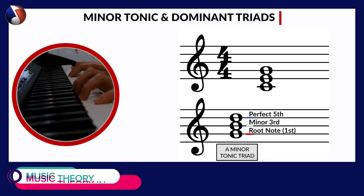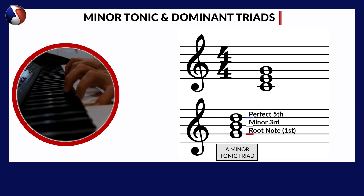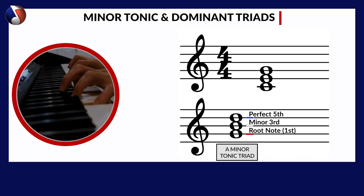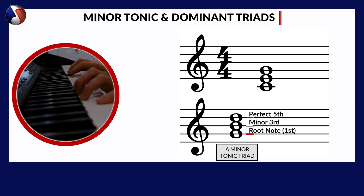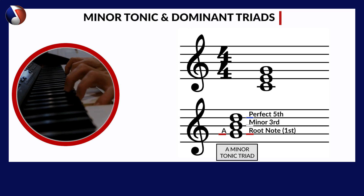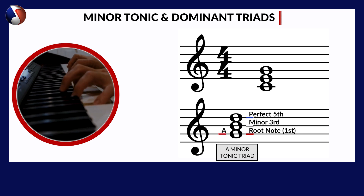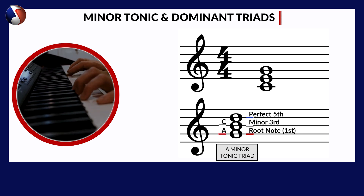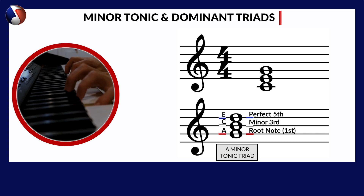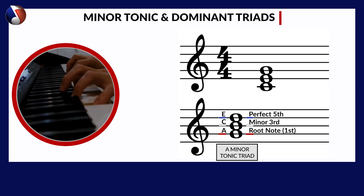For example, in A minor, the tonic chord is created using the notes A, which is the tonic, C, the minor third, and E, which is a perfect fifth.